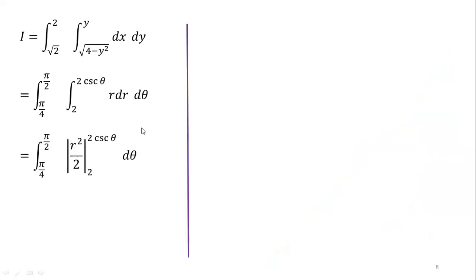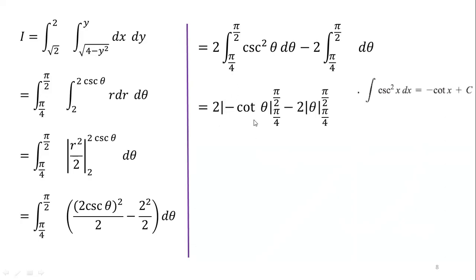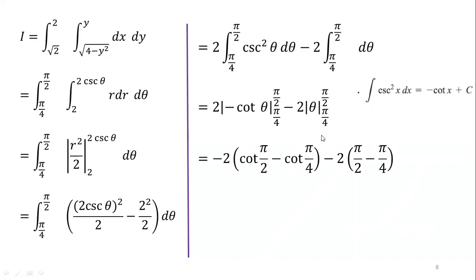Now we transform the integral into polar form, replacing dx dy with r dr dθ. The limits of r are 2 to 2 csc(theta) and the limits of theta are π/4 to π/2. Integrating r gives r²/2 for the given limits. Applying the fundamental theorem of calculus (upper minus lower limit) and simplifying, we get 2∫[π/4 to π/2] csc²(theta) dθ − 2∫[π/4 to π/2] dθ. Since the integral of csc²(theta) is −cot(theta), we evaluate: 2[−cot(theta)] from π/4 to π/2 minus 2[theta] from π/4 to π/2. Since cot(π/2) = 0 and cot(π/4) = 1, and π/2 − π/4 = π/4, after simplification we get the final answer: 2 − π/2.